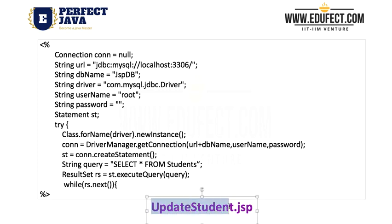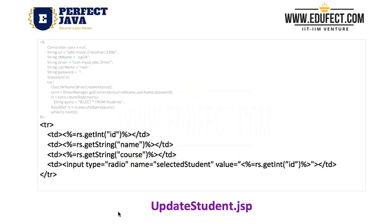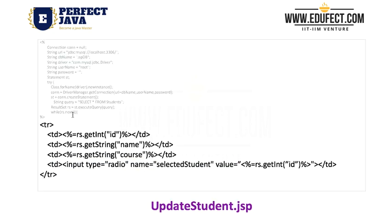We are creating 'updateStudent.jsp' and the purpose of this JSP is to select the student whose details we want to update. We are creating a standard connection to the database and running the query 'SELECT * FROM students', selecting all the students and then displaying them.